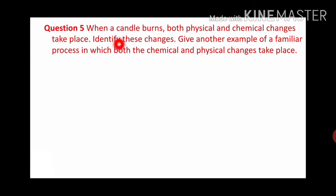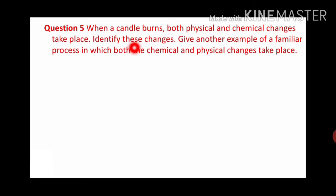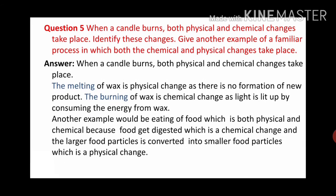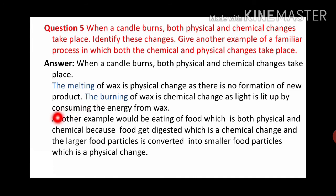Next question: when a candle burns, both physical and chemical changes take place. Identify these changes and give another example of a familiar process in which both chemical and physical changes take place. When a candle burns, both physical and chemical changes take place. The melting of wax is a physical change, as there is no formation of a new product. The burning of wax is a chemical change, as light is produced by consuming energy from the wax.